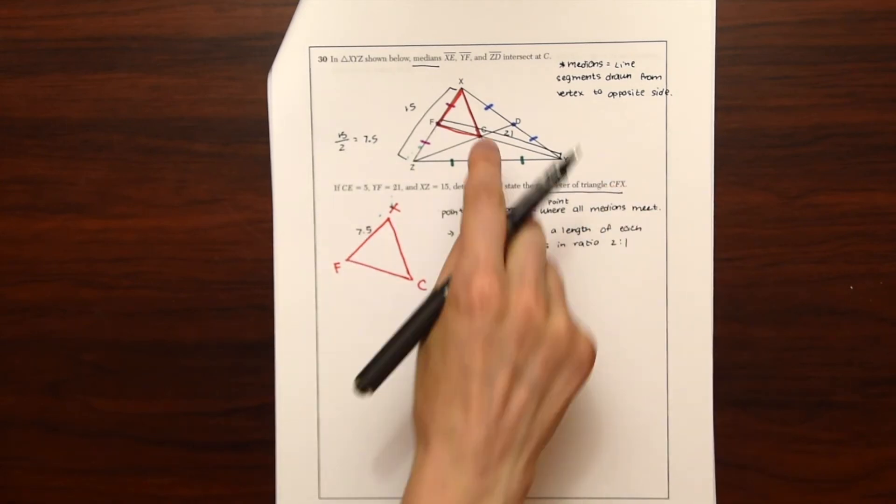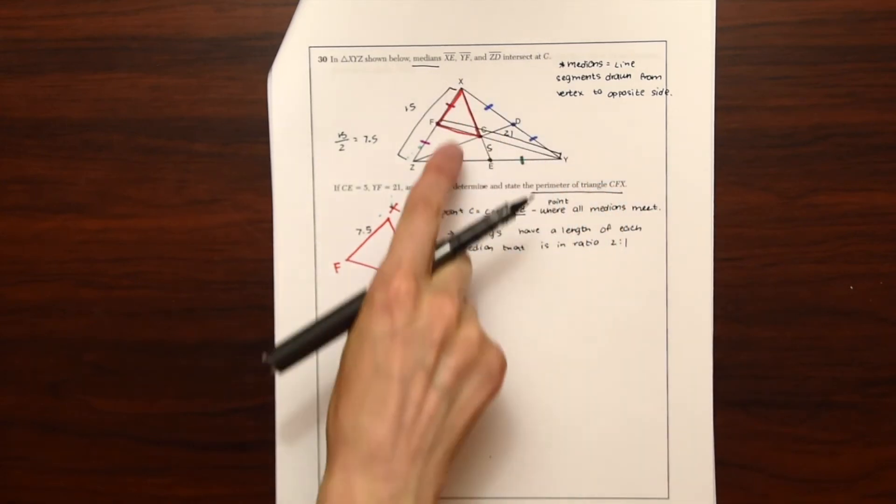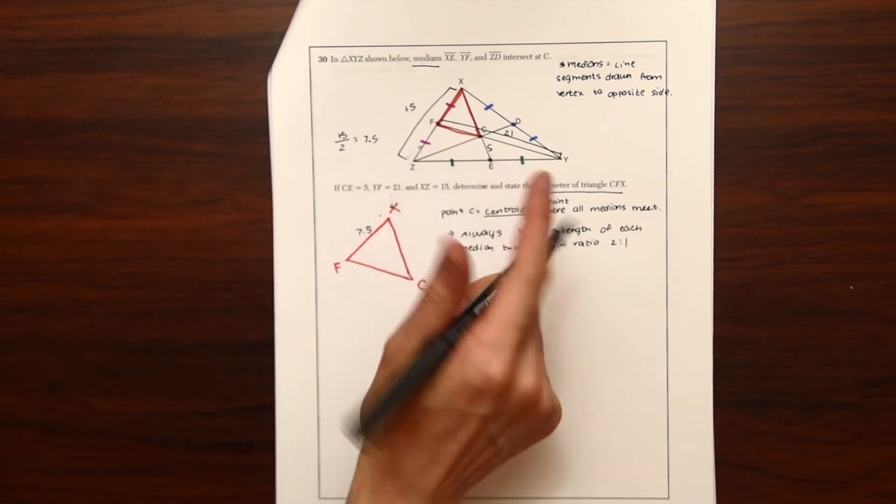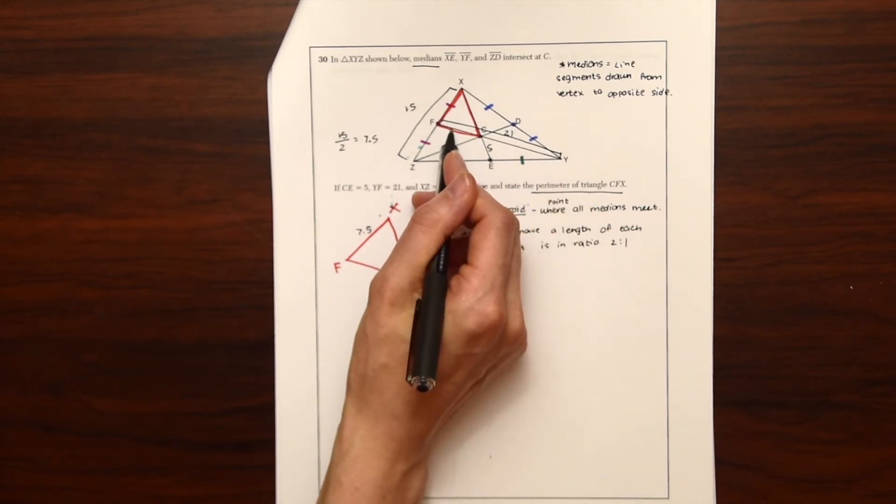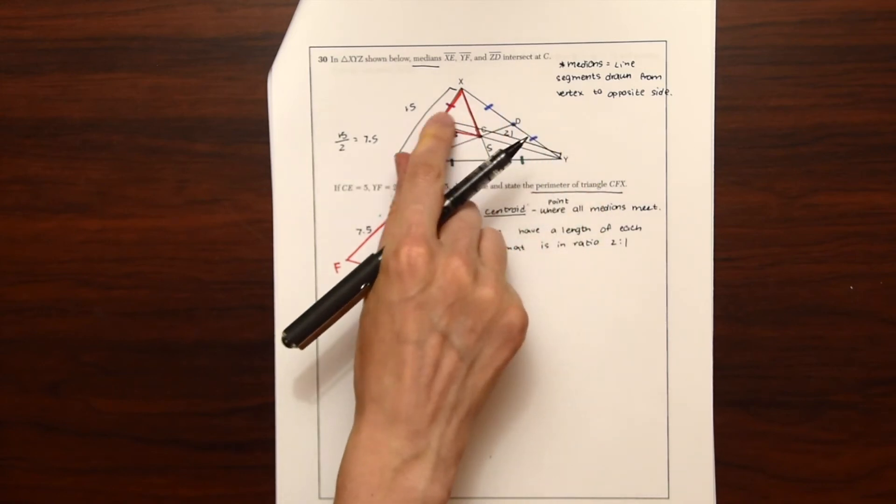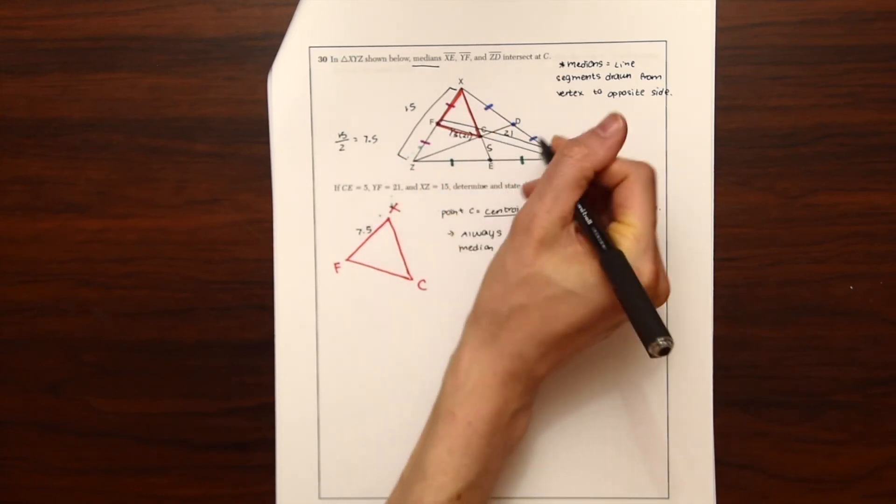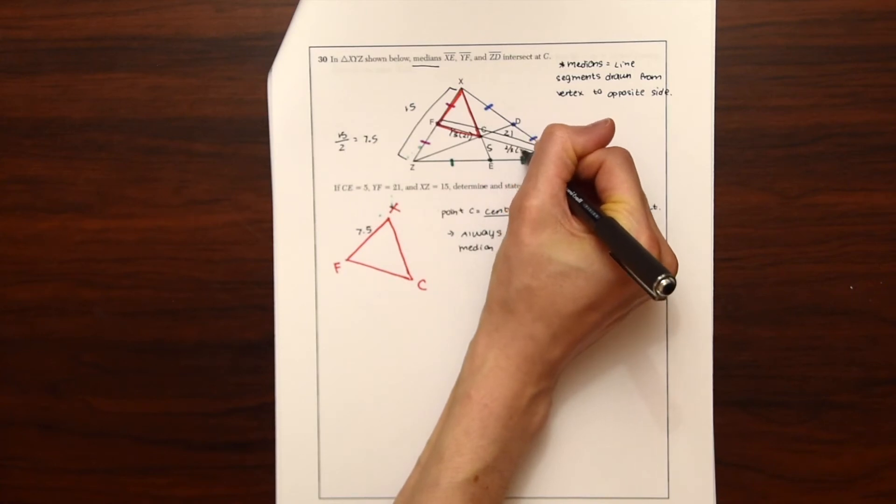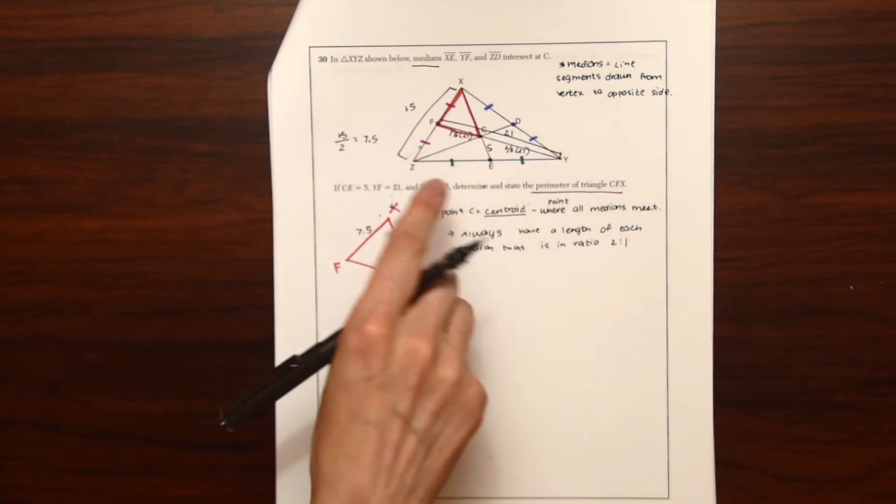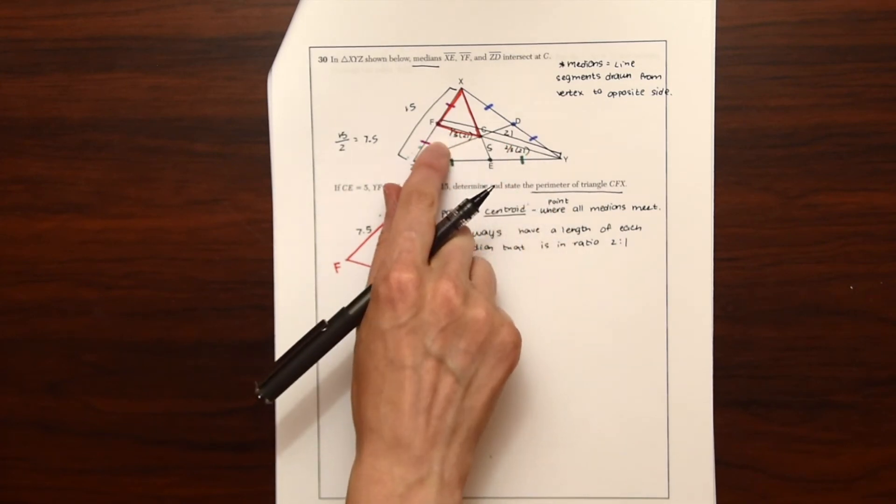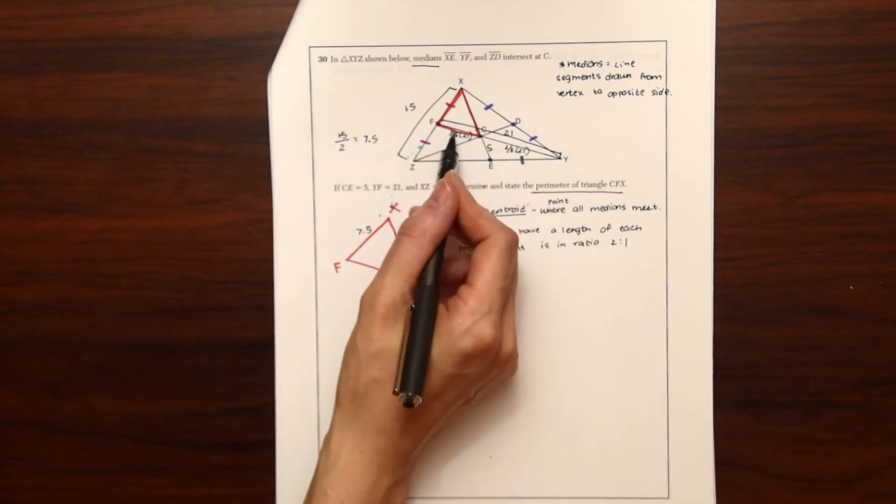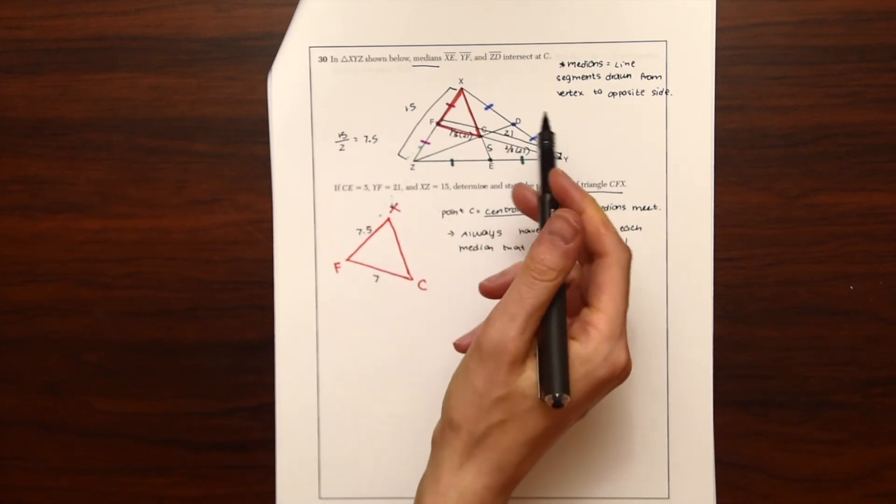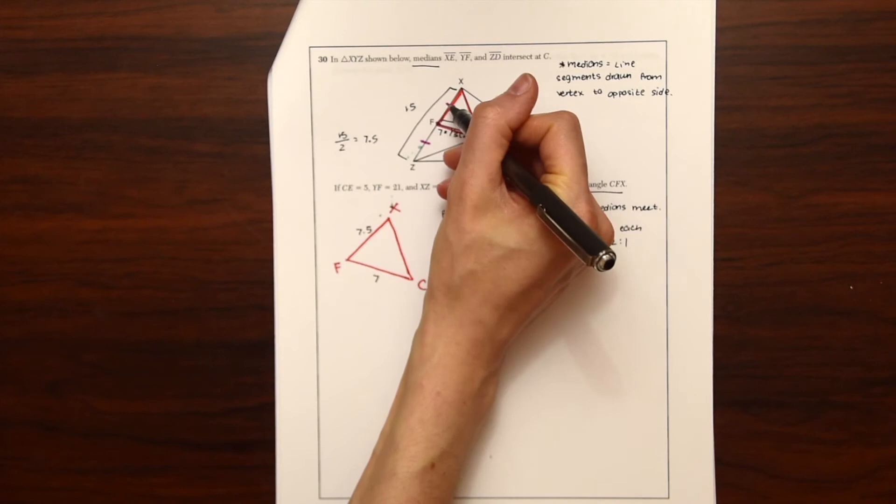So what that means is each median has a length that is 2 to 1 in the ratio. So if you look at this entire value that is 21, we know that 1 third of 21 will be up here and the value of 2 thirds of 21 will be down here. It's always split and you could easily see which side is longer and which side is shorter. So we can find the value of 21 times 1 third, which is just going to be 7.